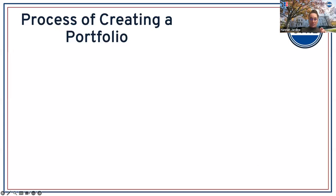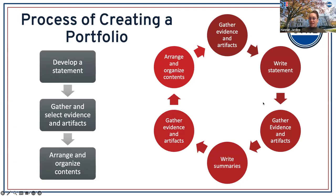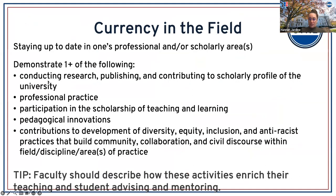In terms of a process for creating your portfolio: the typical trajectory might be that you write your narrative and teaching statement, then think about what evidence and artifacts to select to back up what you're writing, then put it all together. But we encourage you to think of this as an ongoing, iterative process — your statement might come from what you're seeing in the evidence and artifacts you're gathering. You might write summaries to help think through the materials. Also encouraging you to use merit memos or other documentation you've submitted at other points as a starting point for your narrative.